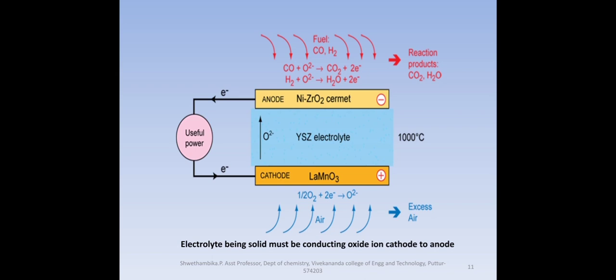Further, movement of electrons from anode to cathode where we take the power output is also shown as a circuit. Remember one point here, the electrolyte being a solid must be having the capacity to conduct the oxide ion. So it is shown as O2 minus moving from cathode to anode compartment.